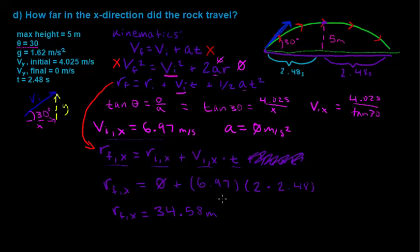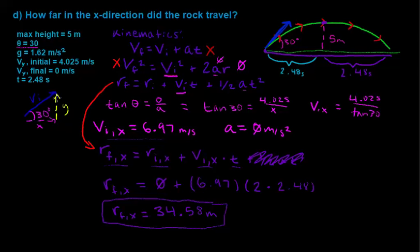Throughout this entire problem, we have used all three of those kinematic equations to solve for different things, and we can see how they're interrelated — we can apply them to the separate components of our analysis as needed. And with that, we have finished our rock launched from the surface of the moon problem.